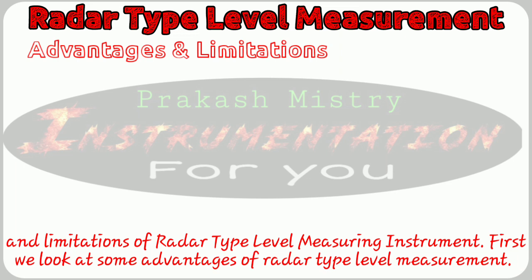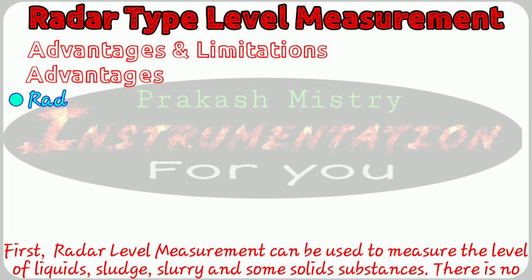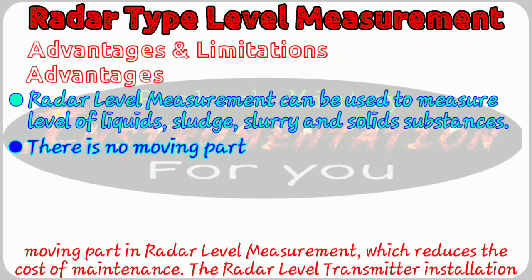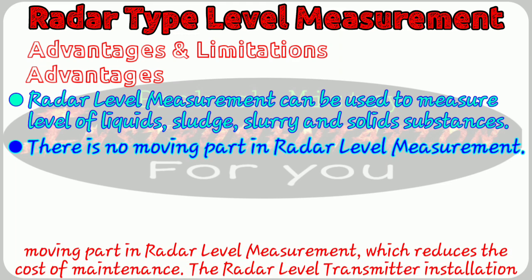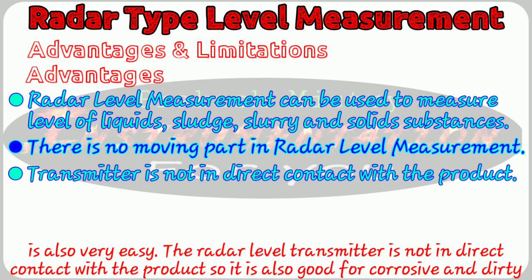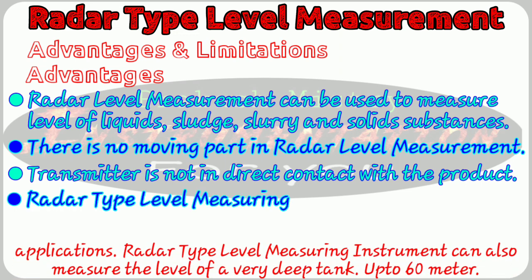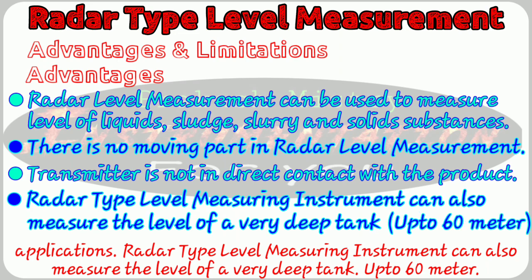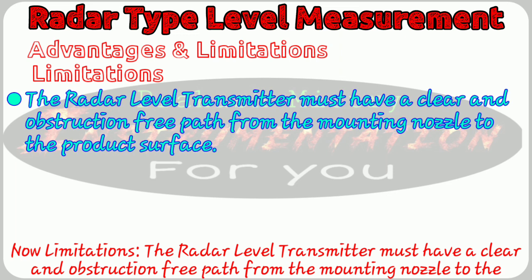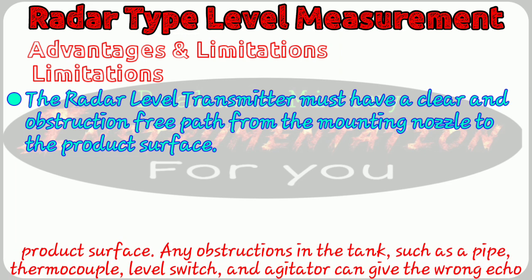Now let's move on to the advantages and limitations of radar type level measuring instruments. Advantages: radar level measurement can be used to measure the level of liquid, sludge, slurry, and semi-solid substances. There are no moving parts in radar type level measurement, which reduces the cost of maintenance, and installation is also very easy. The radar level transmitter is not in direct contact with the product, so it is also good for corrosive and dirty applications. Radar type level measuring instruments can also measure the level of very deep tanks, up to 60 meters. Limitations: the radar level transmitter must have a clear and obstruction-free path from the mounting nozzle to the product surface. Any obstructions in the tank such as pipes, thermocouples, level switches, and agitators can give a wrong echo signal.